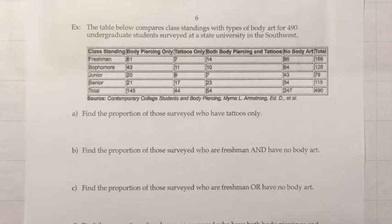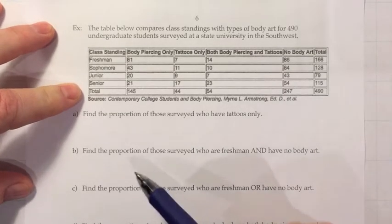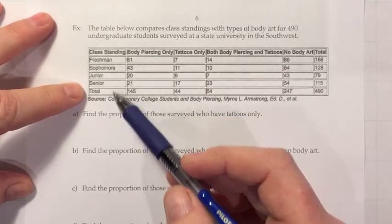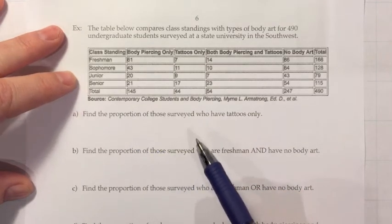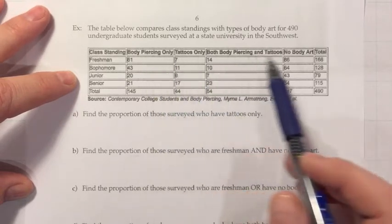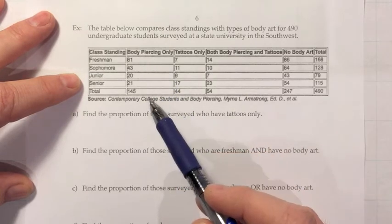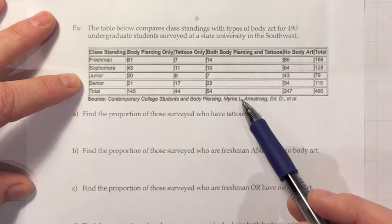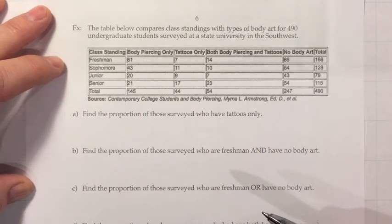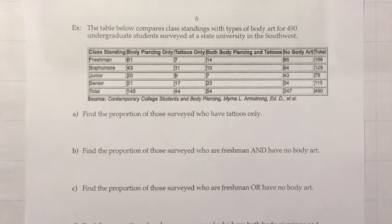Now let's look at an example where we make use of a two-way table. This table compares class standing with types of body art for 490 undergraduate students surveyed at a state university in the southwest. Students could be freshmen, sophomores, juniors, or seniors. Body art categories are: piercings only, tattoos only, both, or none. For example, a freshman with a tattoo but no piercing would go in that specific square.